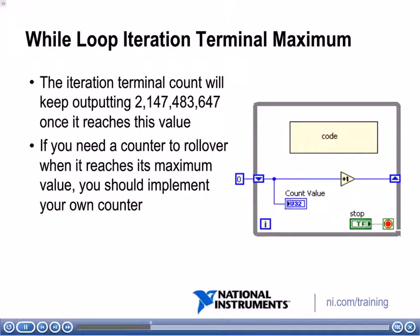When you're executing code on the FPGA, because of the speeds involved, you might have while loops that reach that 2 billion count very quickly. And if you're relying on that iteration terminal to roll over, you're not going to get that expected behavior. So if you need that counter to roll over, you need to implement that logic yourself.